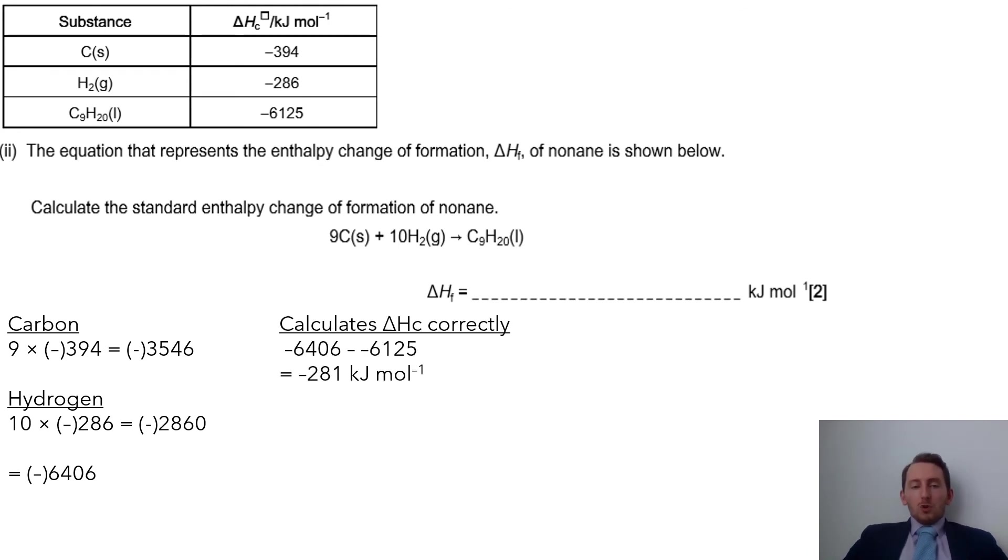So I've got a total for my reactants, I've got my value for my products. No calculation required for my products because there's only one lot of it. So therefore if I take my reactants and I minus them away from my products, so minus minus would be a plus, I'll get -281.